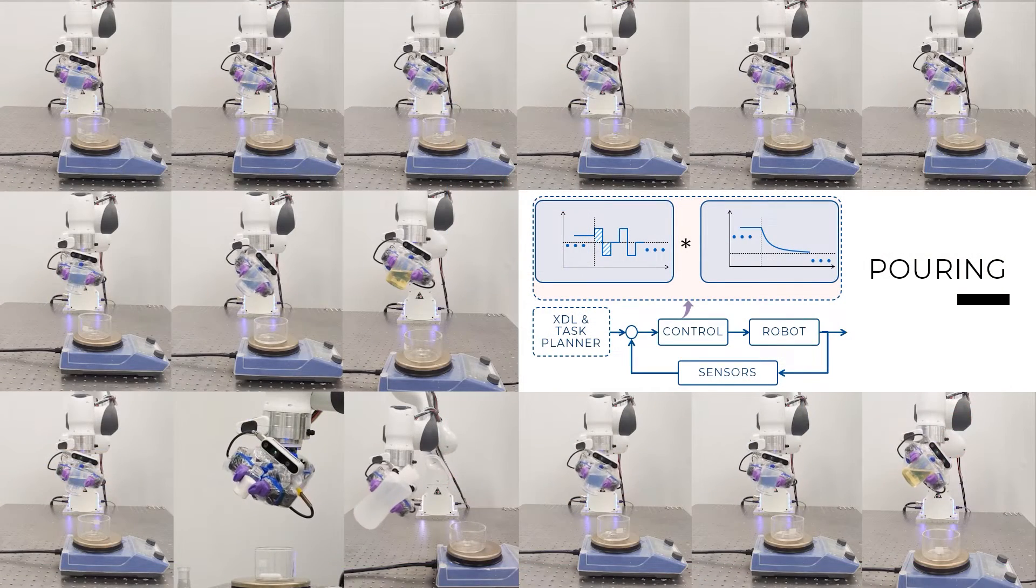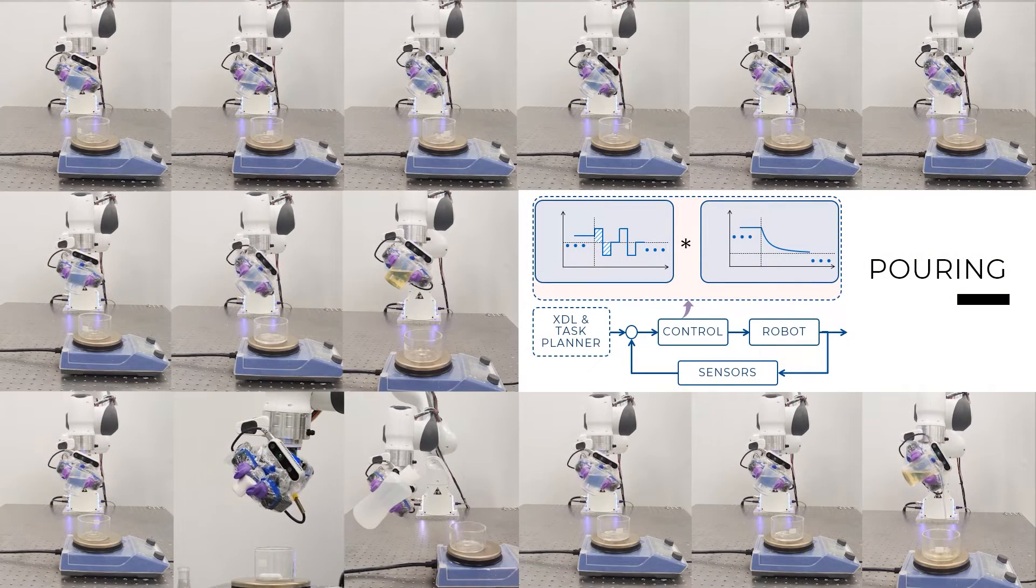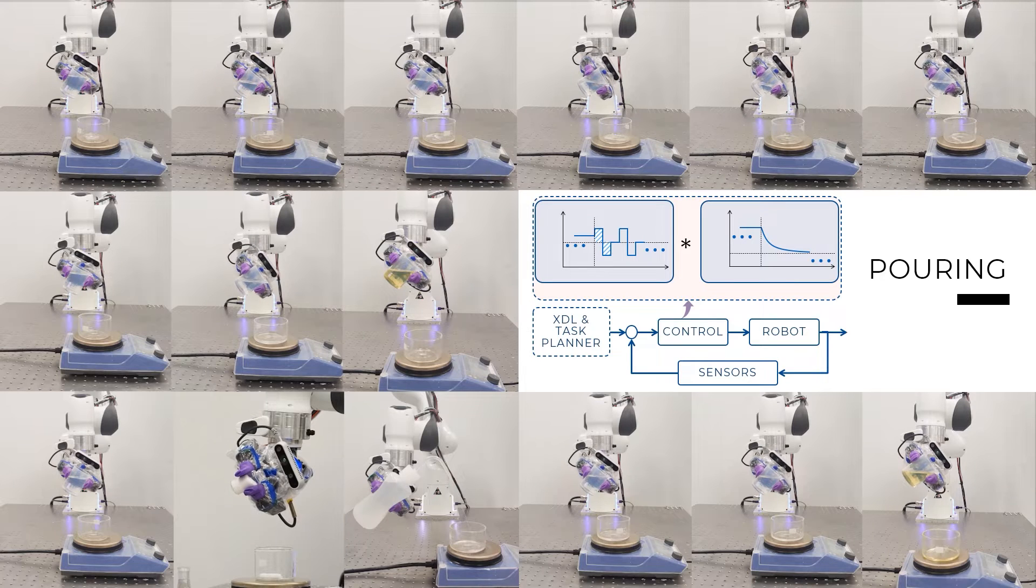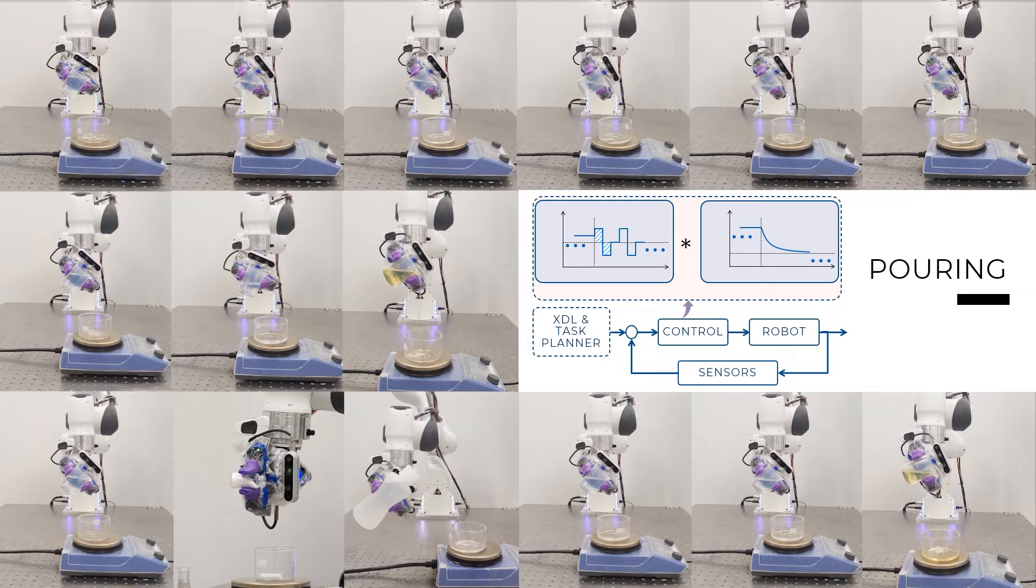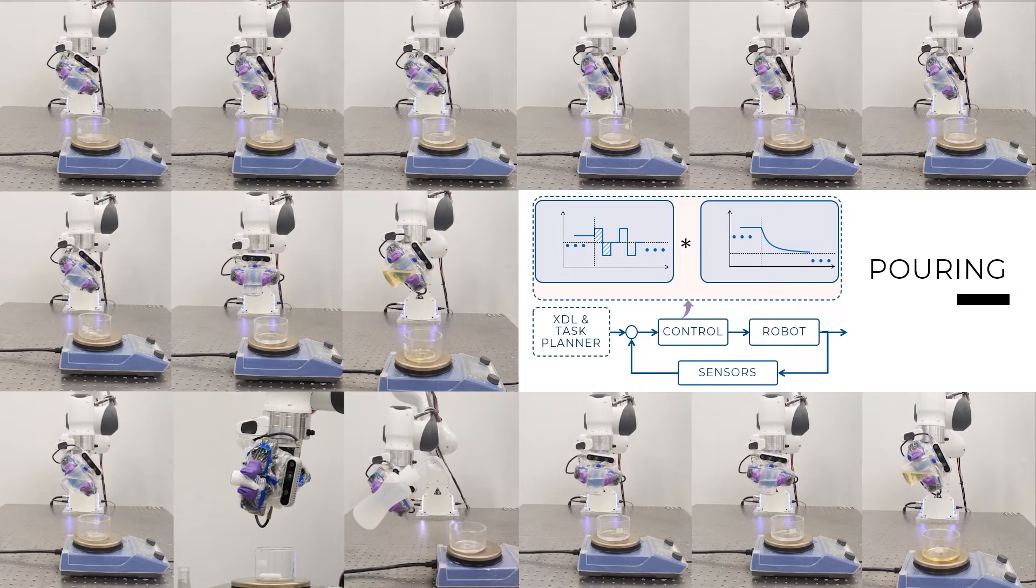We realize accurate closed-loop pouring skills by convolving a PD controller with a shaping function that is inspired by human behavior for pouring. We use velocity control, and the variety of pouring skills can be seen in this video.